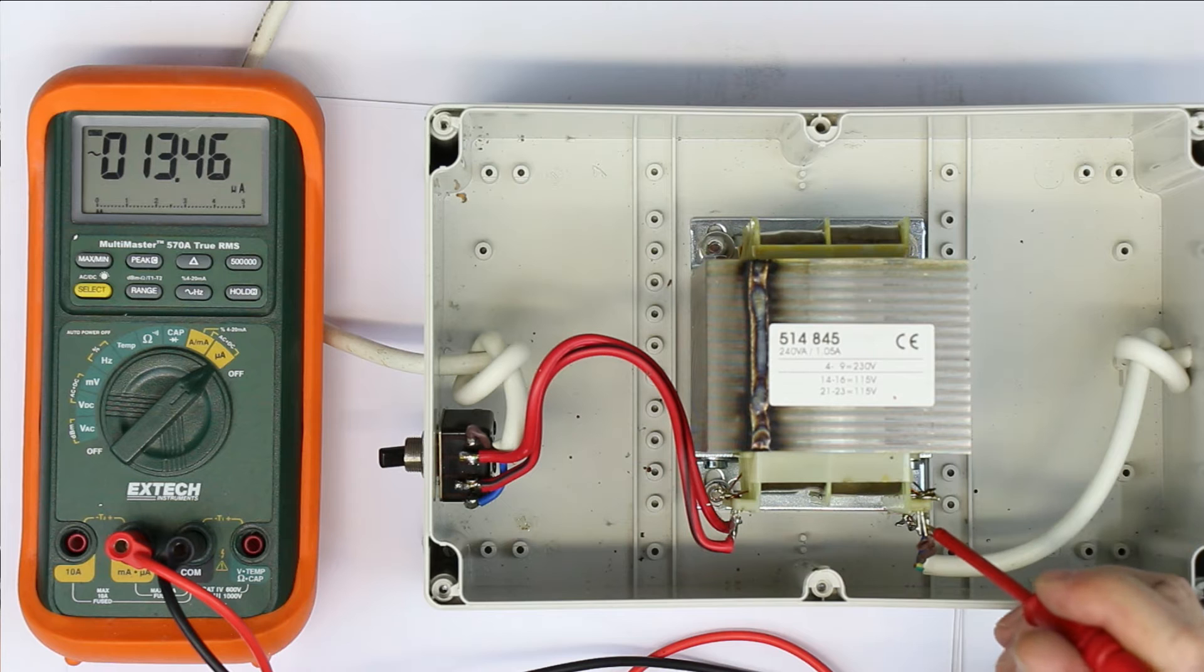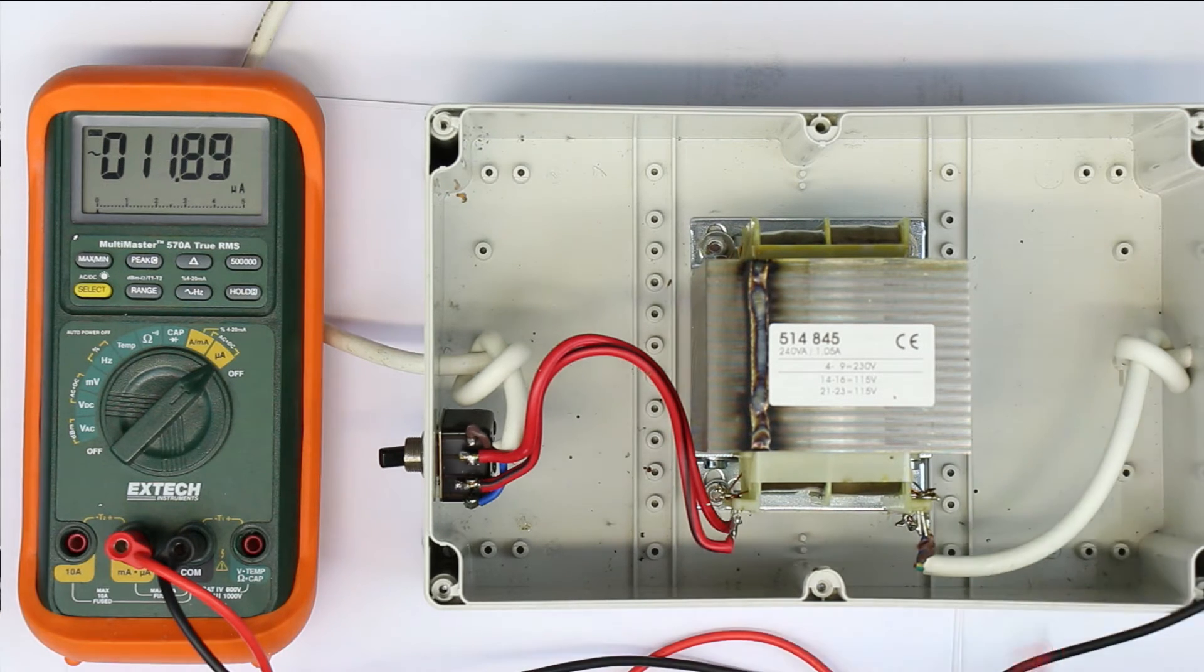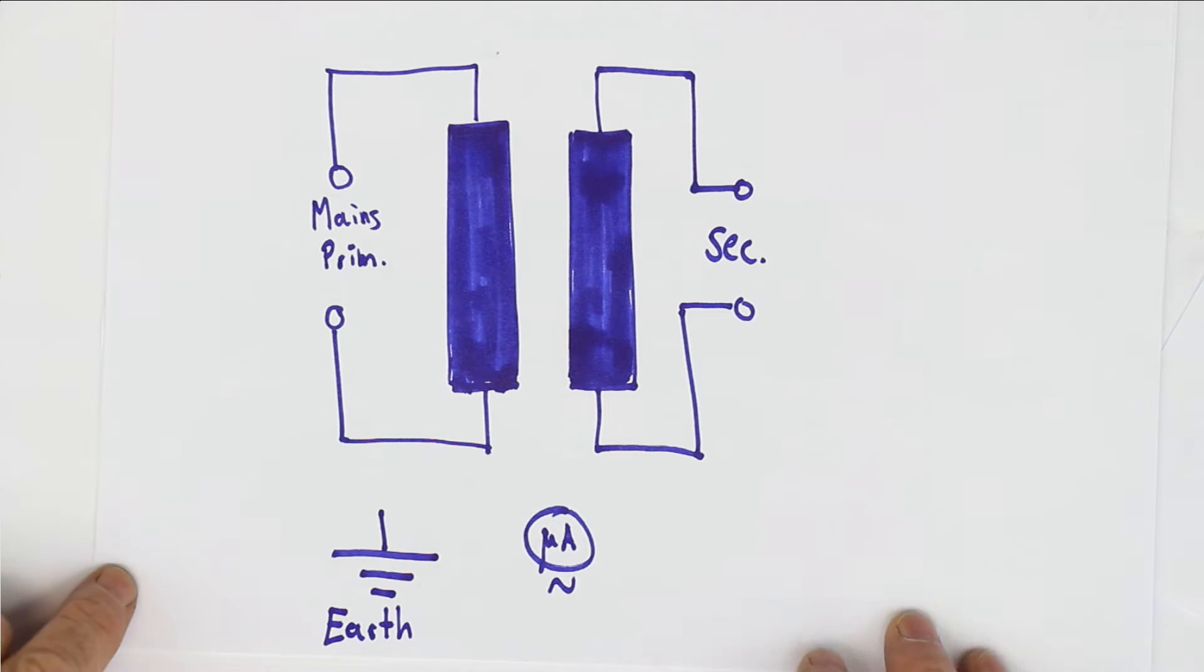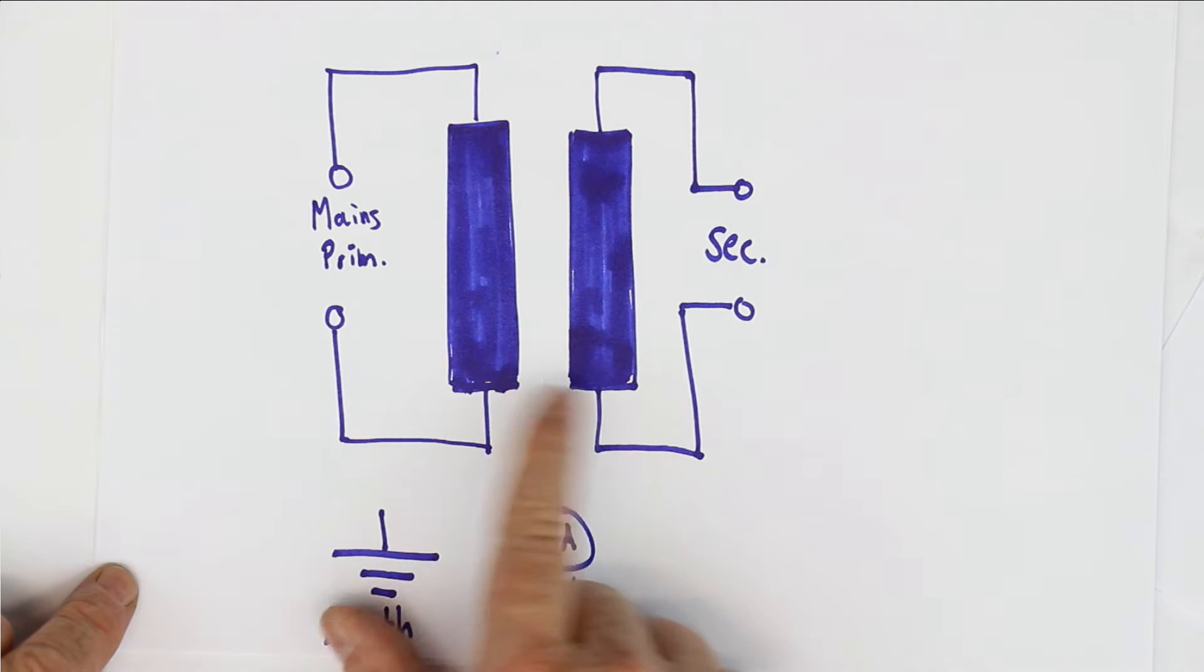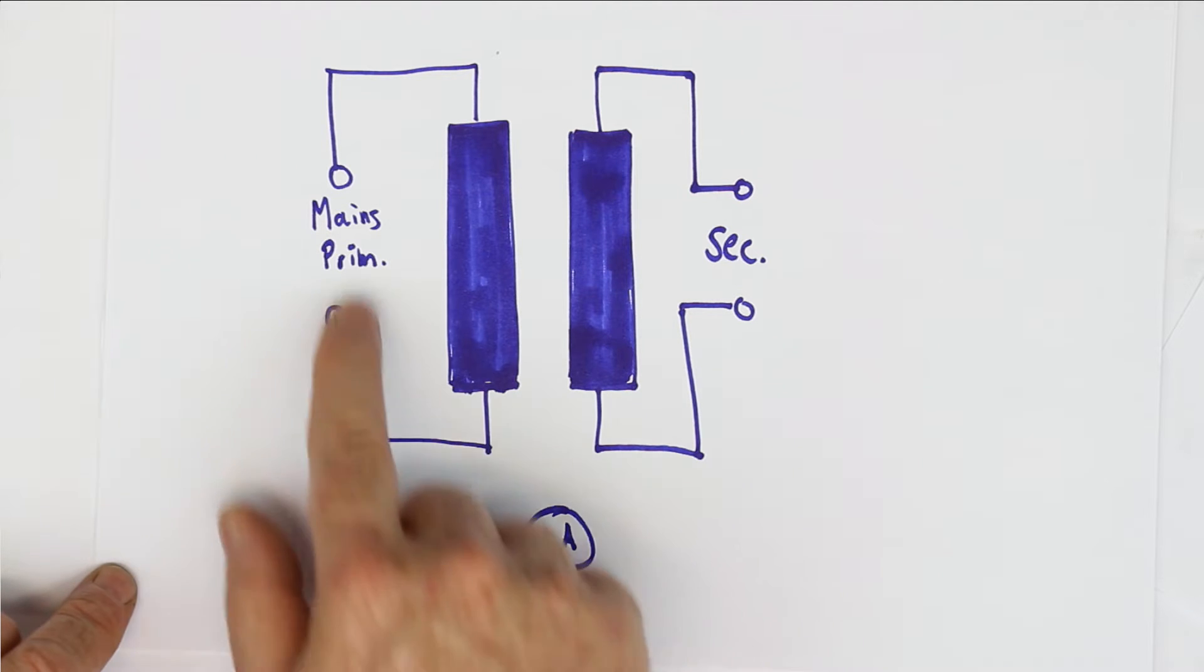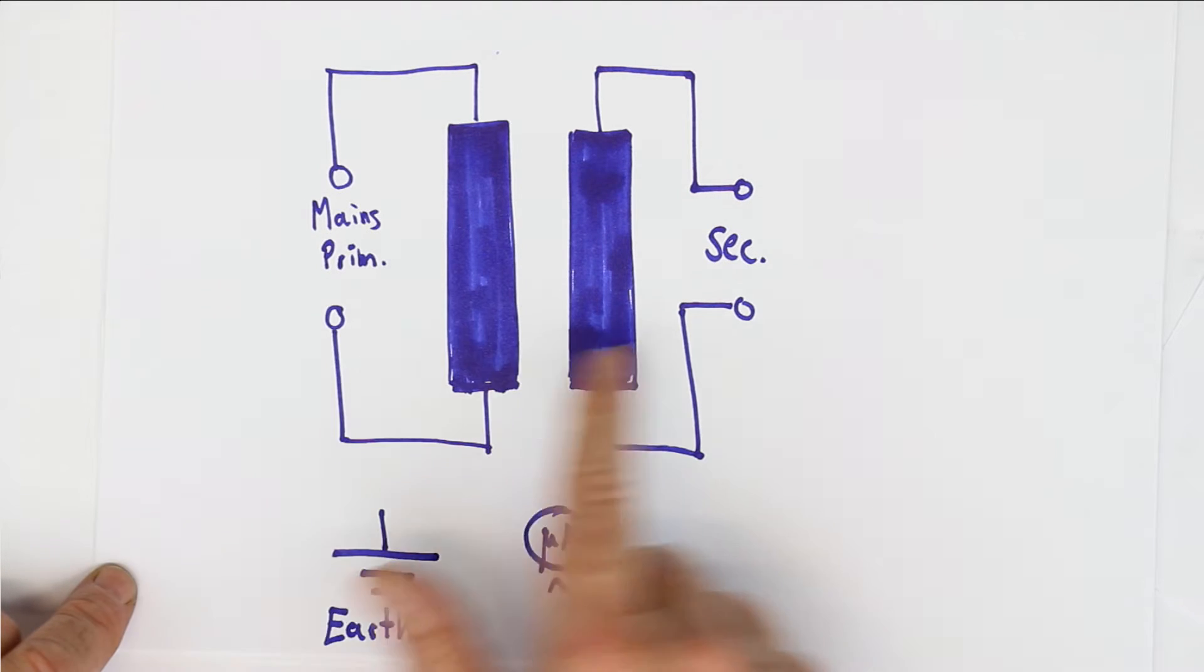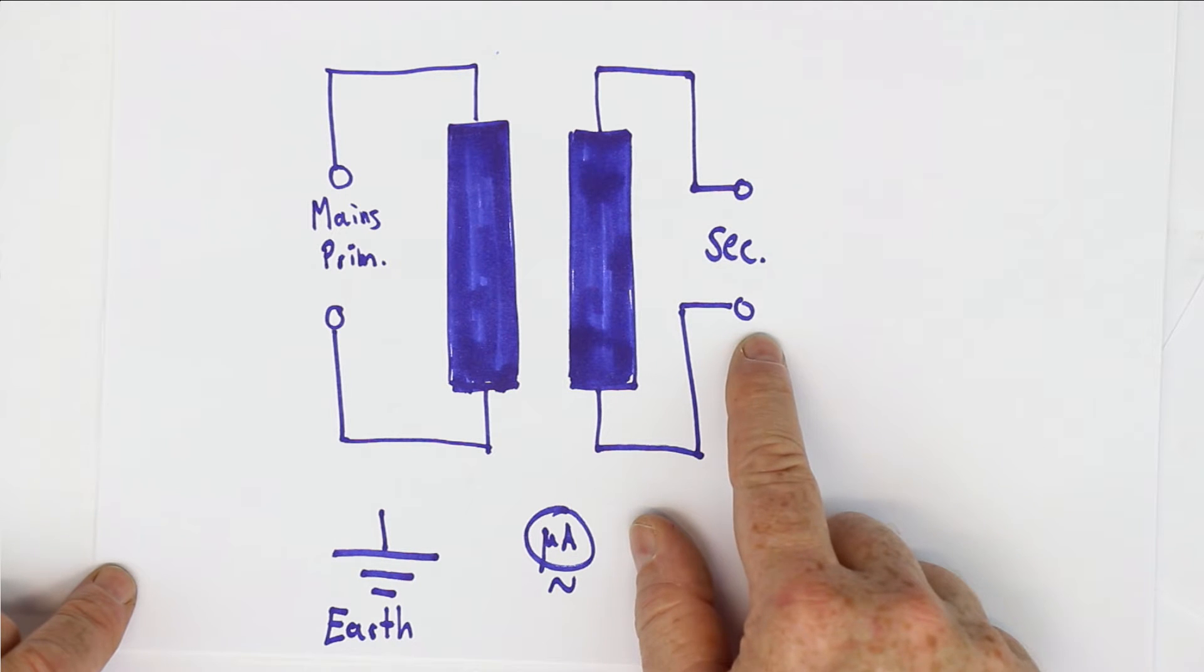We again have to take a piece of paper to explain. Let's take a look at how everything was connected. We had our isolation transformer, or any other transformer—this not only happens with isolation transformers. We have the primary side connected to mains voltage and the secondary side without any load, so it was open circuit.